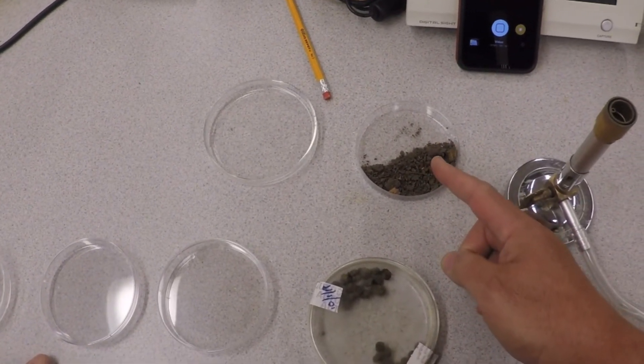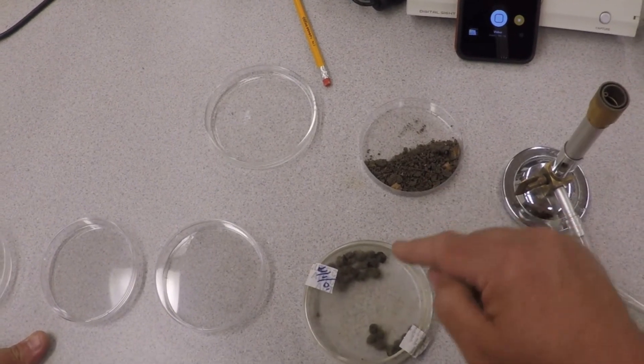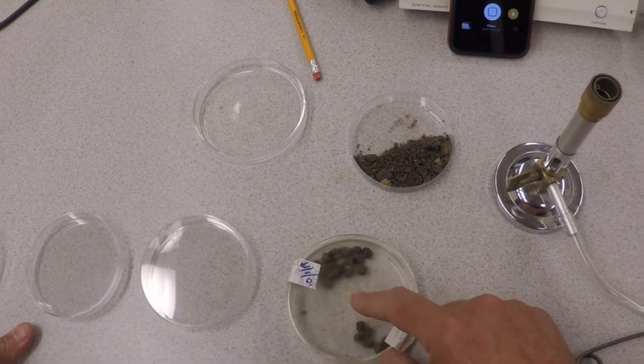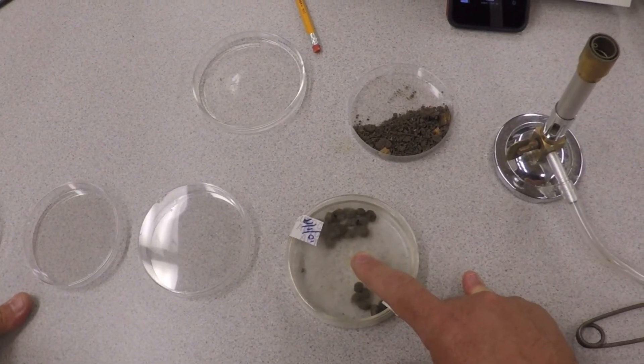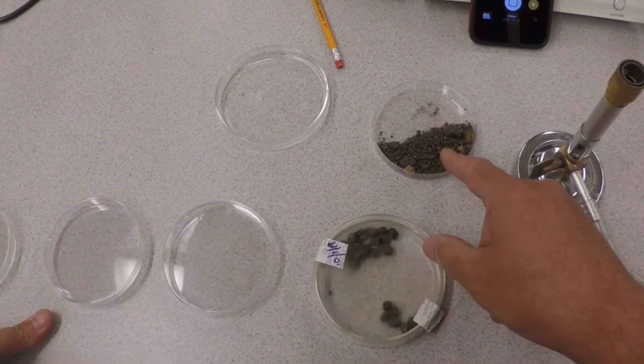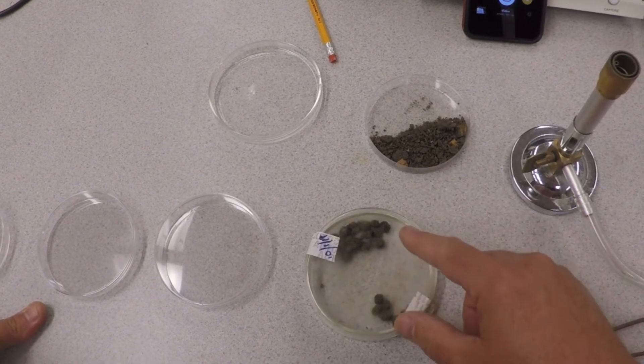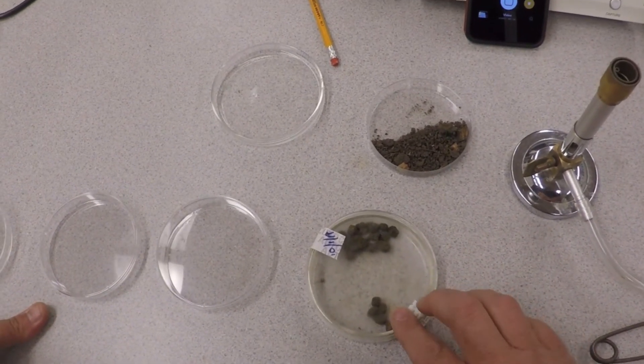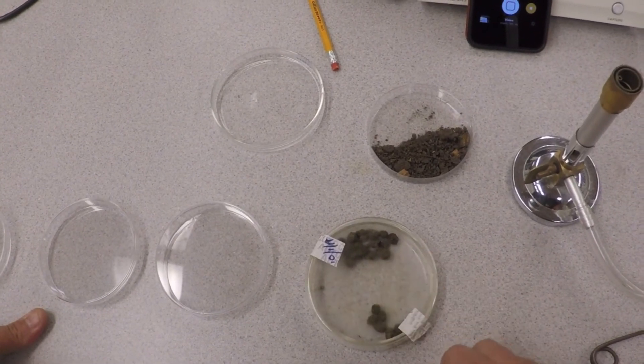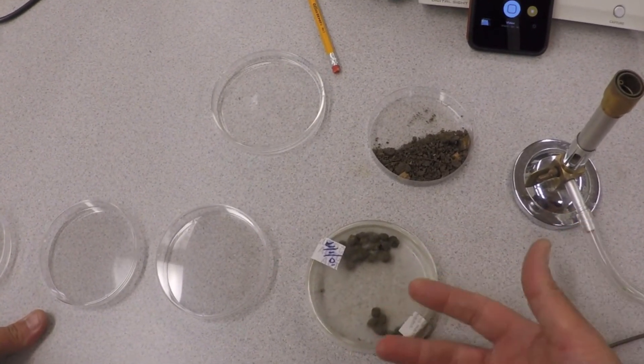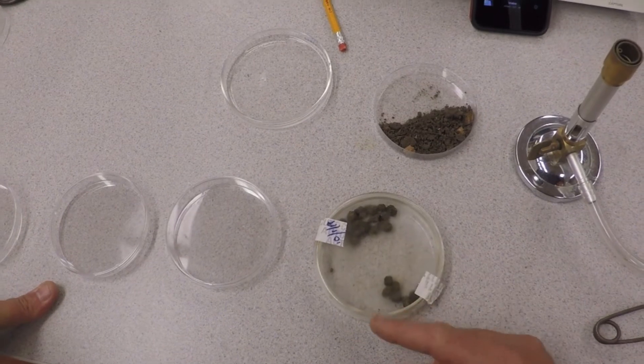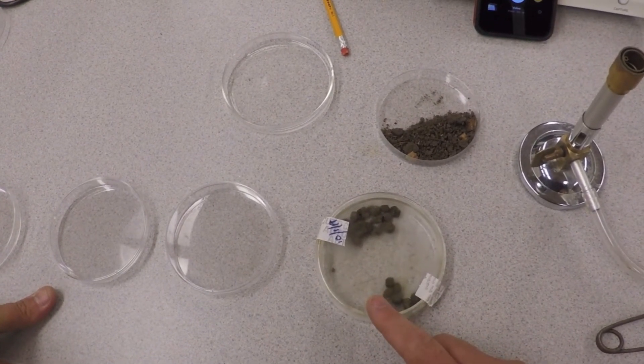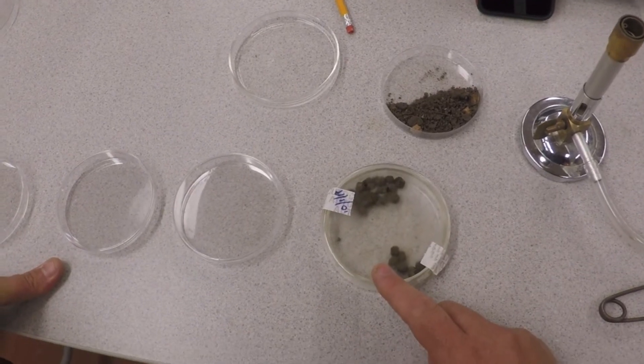But the myxos will be attracted by what's in these dung pellets, the bacteria that are in these dung. Because remember, dung is essentially wall-to-wall bacteria. And so they will come out of the soil. We hope they will go to the little dung pellets and literally crawl on top of them. They will eat the nutrients, the bacteria that are in there. And over time, probably about two weeks, they will run out of nutrients and they will go into a developmental life cycle.